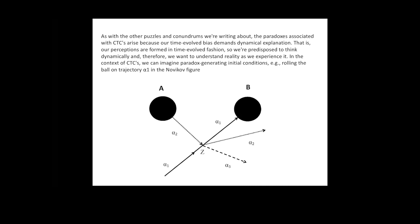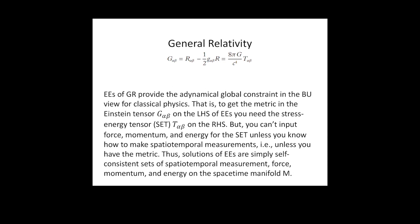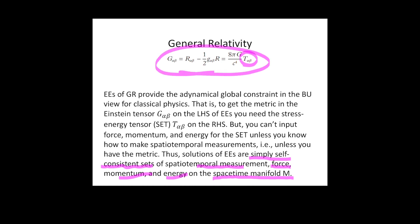So we avoid Arntzenius and Maudlin's concern because we're not ruling out self-inconsistent situations in the Novikov figure due to a violation of logic per se. When we look at the Novikov situation, we're left wondering: what's going to stop us from starting this whole process along trajectory alpha-1 that leads to the self-contradiction? Do we need to invoke an additional self-consistency constraint in addition to Einstein's equations of general relativity? The answer is no, because the solutions of Einstein's equations have to apply over the entirety of the space-time manifold, and they have to be self-consistent sets of spatiotemporal measurement, force, momentum, and energy. So even if the stress-energy tensor is very small so as not to affect the geometry appreciably by introducing the object on trajectory alpha-1 or not, nonetheless it is in Einstein's equations and therefore has to be self-consistent and divergence-free on the entirety of the space-time manifold.